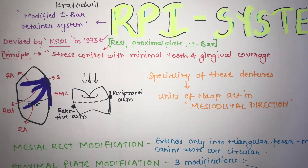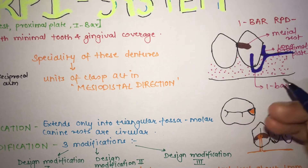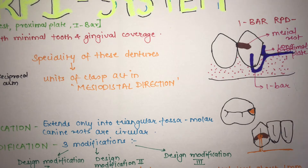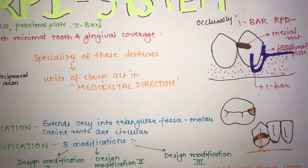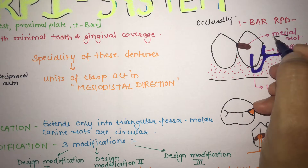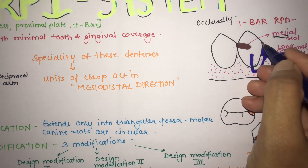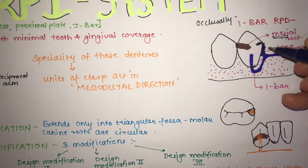In the I-bar removable partial denture, the three main components are the rest, proximal plate, and direct retainer. In this system, the direct retainer is an I-bar, which is gingivally approaching, whereas in conventional RPDs the most commonly used direct retainers are occlusally approaching. Additionally, in the I-bar RPD the rest is placed on the mesial surface of the abutment tooth, whereas in conventional RPDs the rest is on the distal surface. In the I-bar, the proximal plates are very long, whereas in conventional RPDs the proximal plate has normal length.